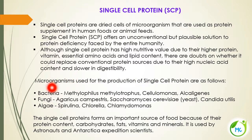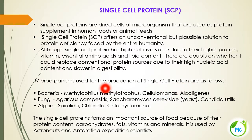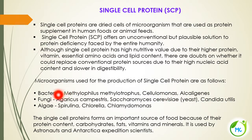Microorganisms used for production of SCP: Bacteria — Methylophilus Methylotrophus, Cellulomonas, Alkyligens. Fungi — Agaricus, Campysteris, Saccharomyces cerevisiae, Candida utilis. Algae — Spirulina, Chlorella, Chlamydomonas. These are the organisms employed as single cell proteins.